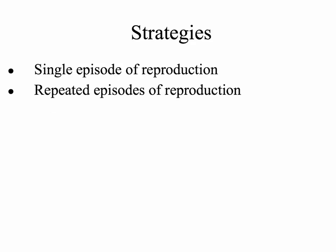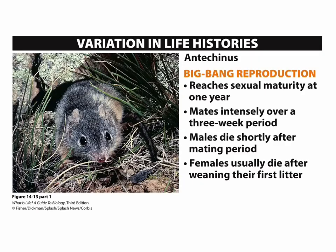Some organisms have a single episode of reproduction in their lifetime, while others have repeated episodes of reproduction throughout their lifetime. The first reproductive strategy we're going to look at is Big Bang reproduction. When these animals reach sexual maturity, they're going to mate one time and put all of their energy into reproducing. At the end of their reproductive event, these animals will die. They put zero amount of energy into growth and maintenance for themselves.